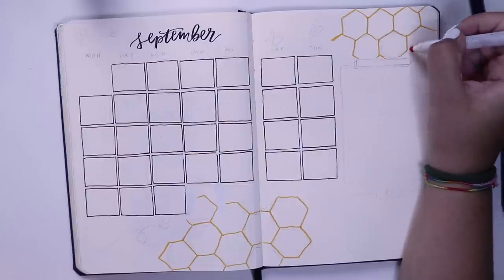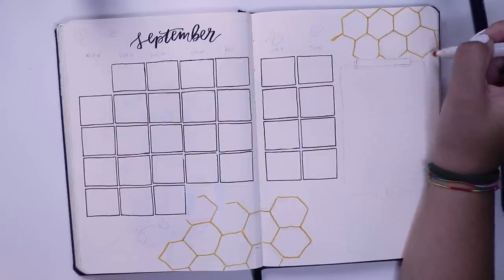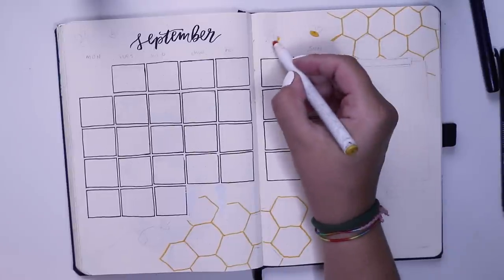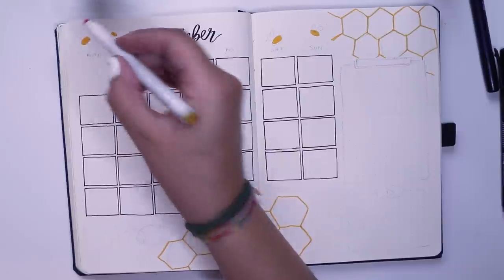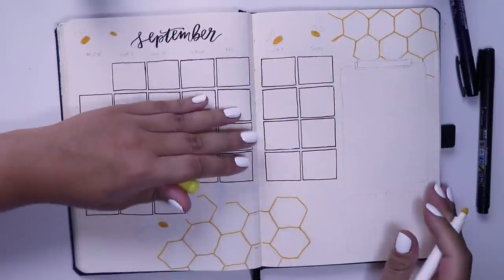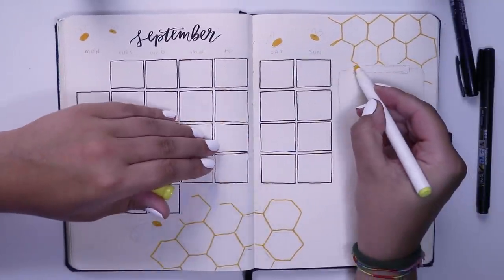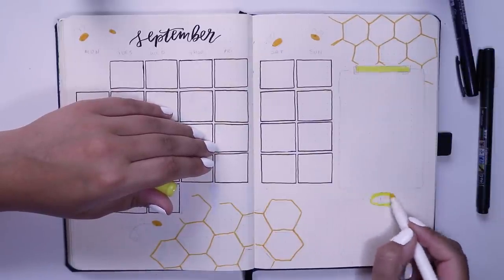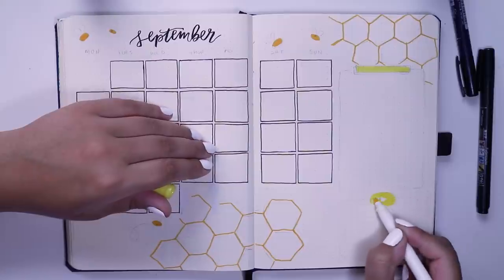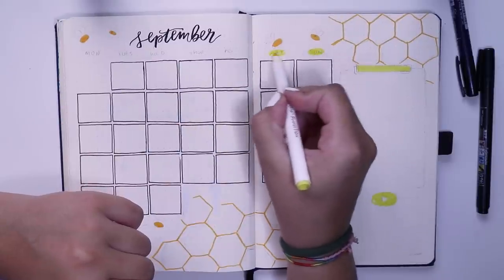Then I went in and added a bunch of bees around the page, as well as adding a little monthly goals and my YouTube planner down there at the bottom. I use my YouTube planner just to plan out what videos I want to film or post that month. My monthly goals are exactly what it says on the tin.